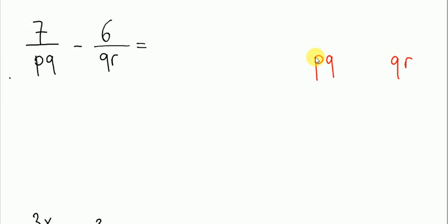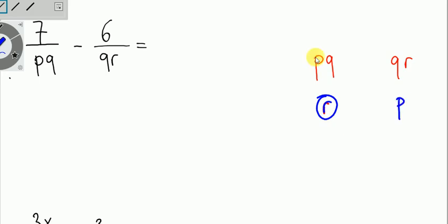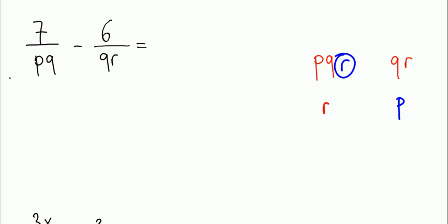For the first denominator, as you can see, R is missing. For the second denominator, P is missing. So I'm going to place P and R next to these letters. It will be P times Q times R as the common denominator.